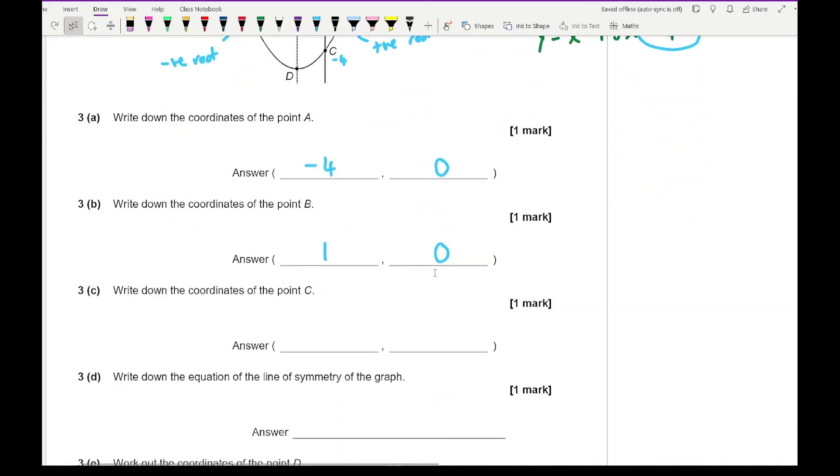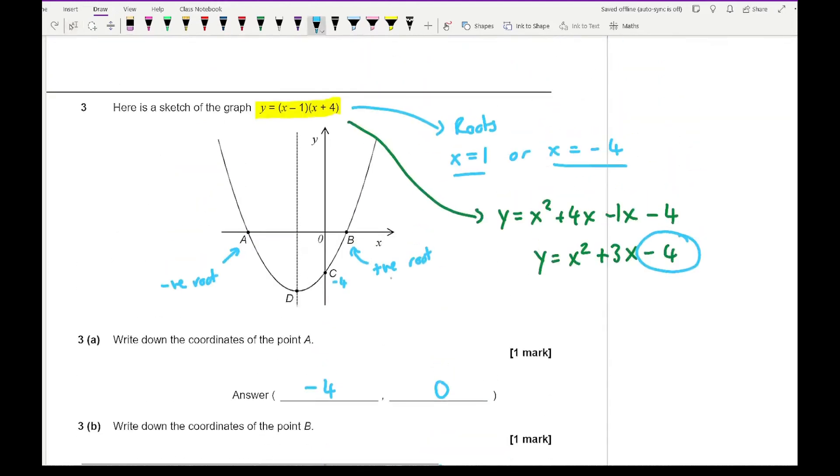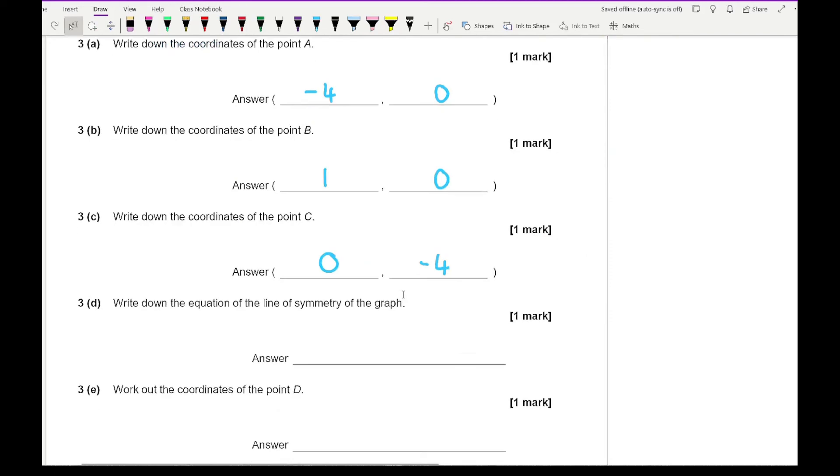The next question then says write down the equation of the line of symmetry from the graph. From this I know that this point here at a is at minus 4. I know that b is at 1. And so the line of symmetry is going to be the midpoint between those two values. To find the midpoint all we've got to do is just add the two x-ordinates together and divide by 2. So minus 4 plus 1 is minus 3. So it's going to be minus 3 over 2 which is minus 1.5. So because this is a vertical line it goes through the x-axis so it's going to be x equals minus 1.5.